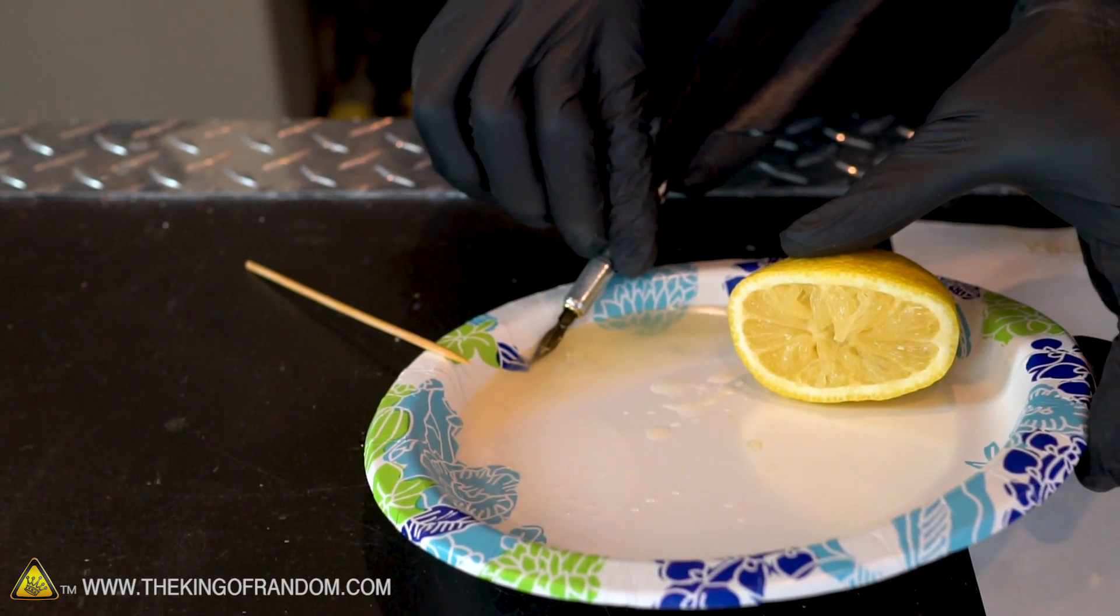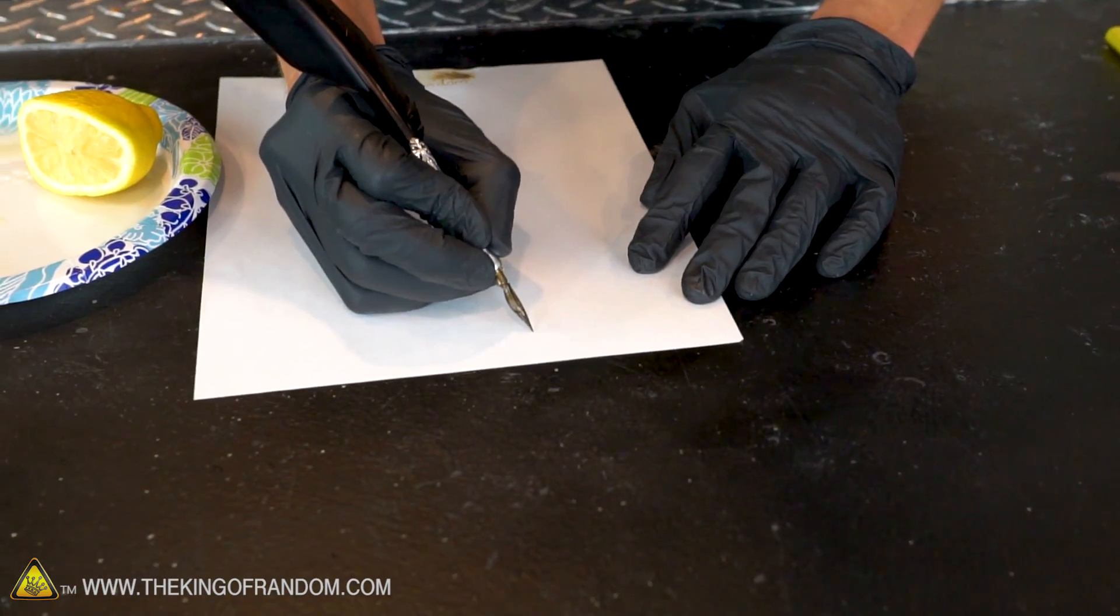That worked pretty well. I'm going to try a slight variation. I have here an old-fashioned fountain pen, and I'm going to try using the lemon juice as ink to write with this instead. Write our secret message.